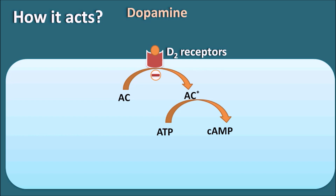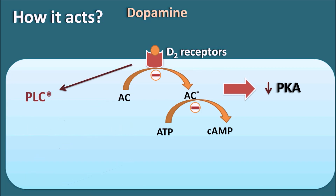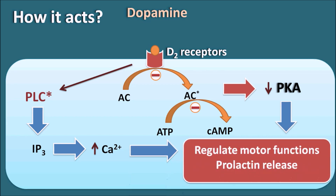As D2 receptors are inhibitory on this system, adenylyl cyclase is inhibited, resulting in decreased levels of protein kinase A. D2 receptors are also coupled with the phospholipase C system. When D2 receptors are occupied, phospholipase C is activated, leading to release of IP3, which increases intracellular calcium levels. When dopamine acts on D2 receptors, protein kinase A is inhibited and intracellular calcium levels are increased.